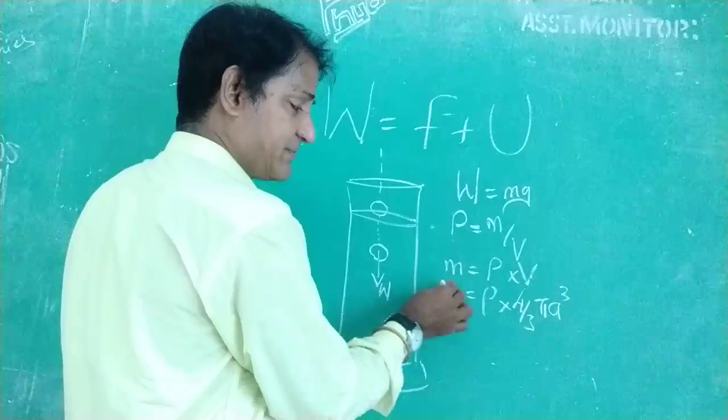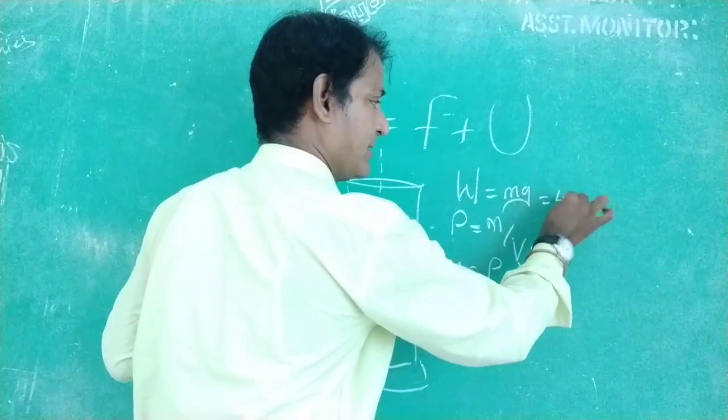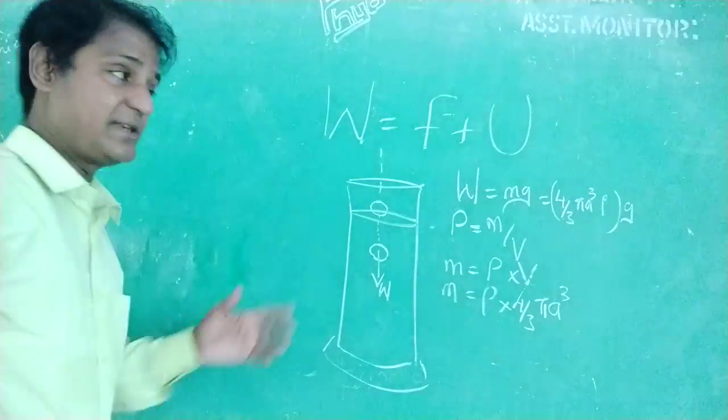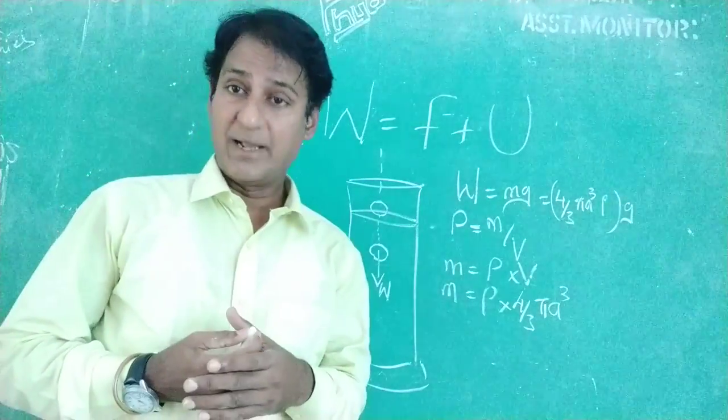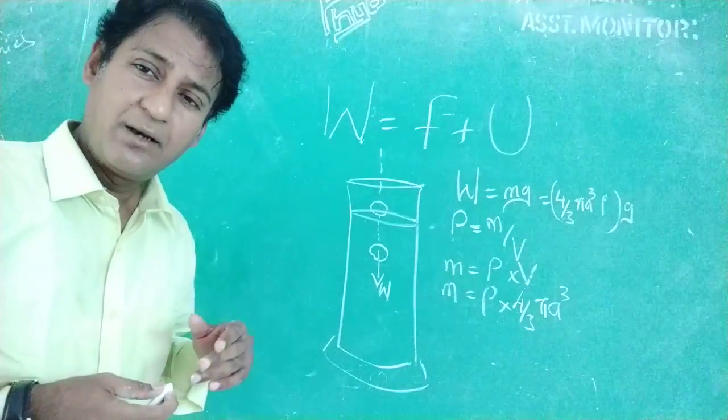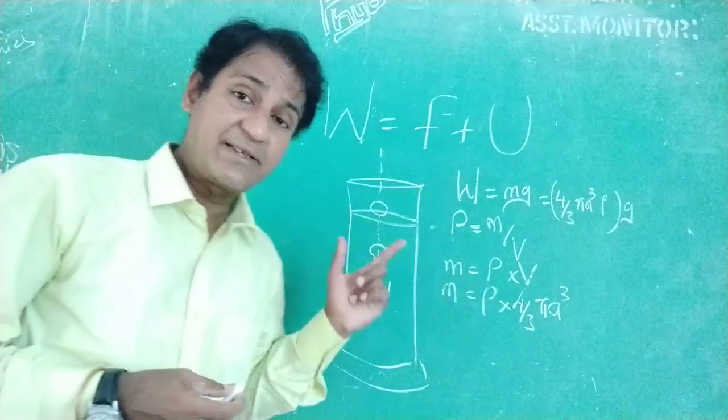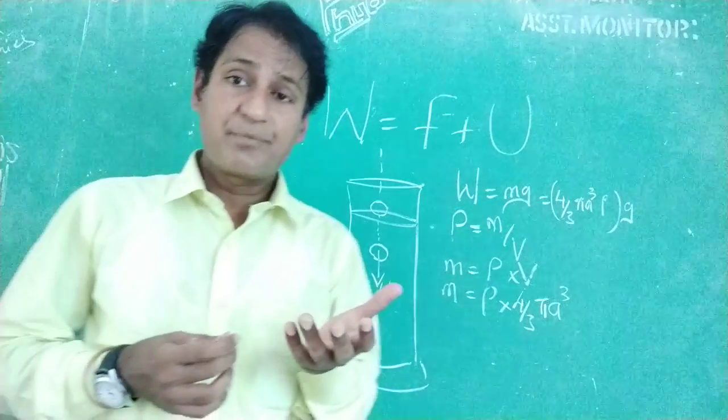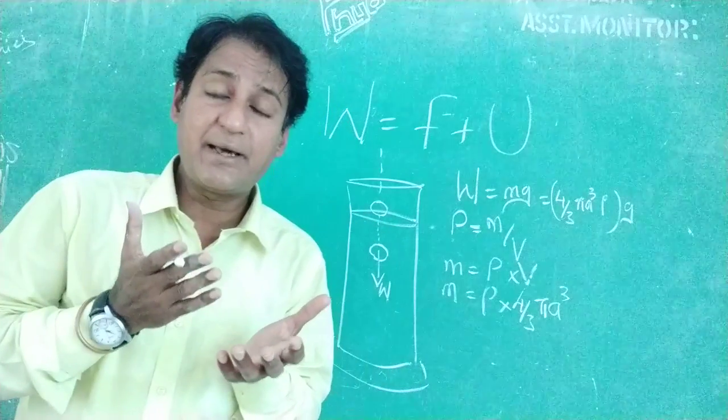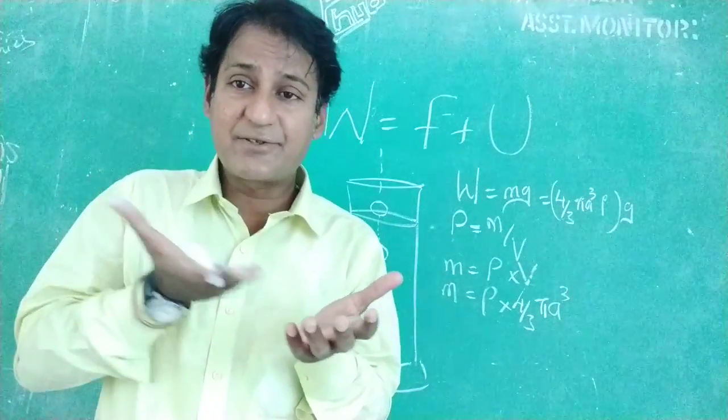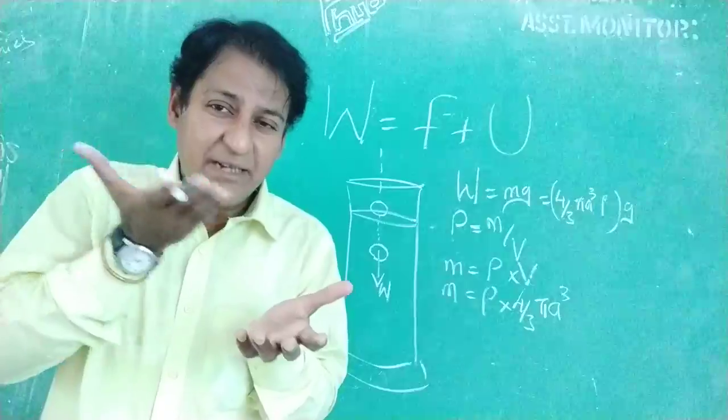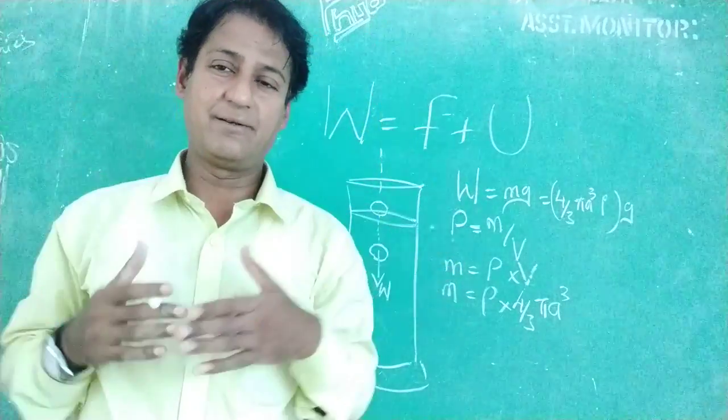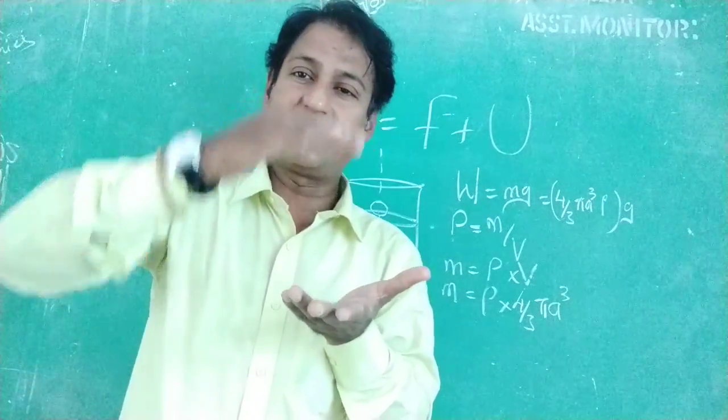When I substitute this value of mass here, this becomes 4 by 3 pi A cube rho into G. So this is the W value. Now, you know one thing, since it is a highly viscous liquid, we all know what is meant by viscosity. If we consider the liquid as different layers, like very thin sheets of cloths in different layers placed on each other, placed one over another, like that.